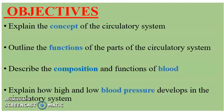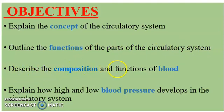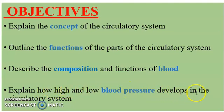Let's look at the main objectives of this course. One, we are going to explain the concept of the circulatory system. Two, we are going to outline the functions of the parts of the circulatory system. Three, we are going to describe the composition and functions of blood. And finally, four, we are going to explain how high and low blood pressure develops in the circulatory system.